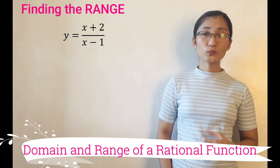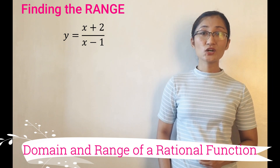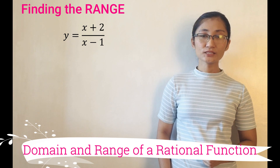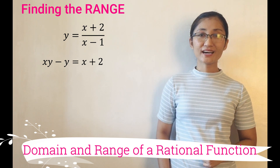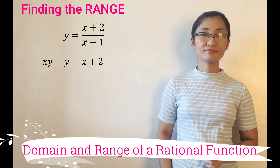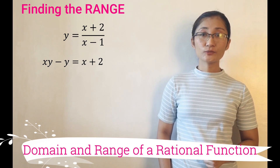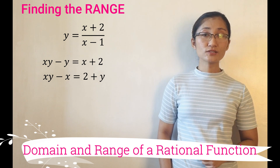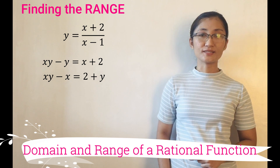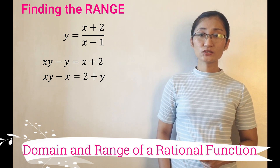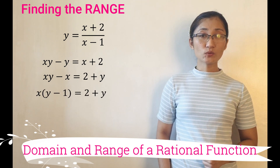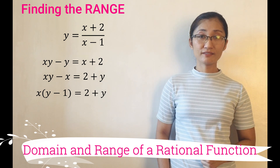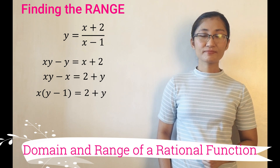In getting the range, we will isolate x on one side of the equation. So, by MPE (multiplication property of equality): xy minus y equals x plus 2. Then by APE (addition property of equality), xy minus x equals 2 plus y. The technique is to write all x's on the left-hand side. Then we have x times the quantity (y minus 1) equals 2 plus y, done by factoring since the common factor of xy and negative x is x.